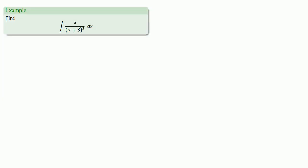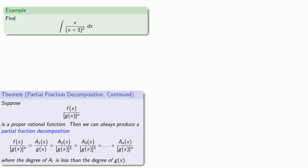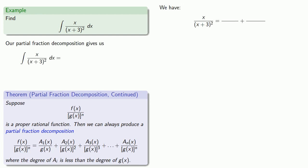So let's take a look at that. Let's say I want to find the anti-derivative of x over (x + 3)². Notice that in this case our denominator is the power of a polynomial. It's (x + 3)². So the theorem says that I can write this as a sum of proper rational functions where the denominators are the powers of (x + 3) and the numerators all have degree less than the degree of (x + 3).